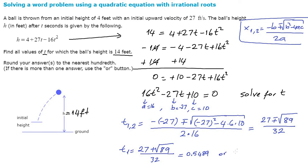Or there's another value of t. t2 is equal to 27 minus this time square root of 89 divided by 32 again. And this value is equal to 1.1385.